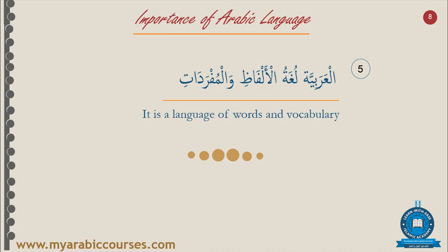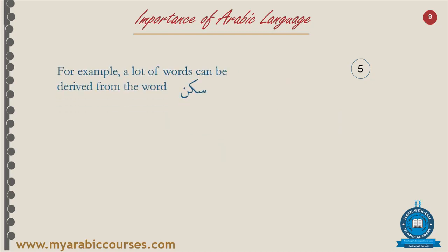Arabic language is also a language of rich words and vocabulary. For example, from the three letters س-ك-ن you can derive more than 30 different words. You say سَكَن — with a فتحة on the كاف — meaning 'the house.' If you change it to سَكَّن, it means 'the people living in the house.'